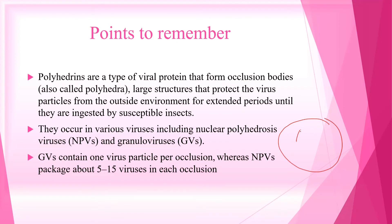NPV stands for nuclear polyhedrosis virus. Polyhedrin proteins are structural proteins found in occlusion bodies, which protect virus particles. NPV viruses form occlusion bodies, and granuloviruses (GV) contain 5-15 virus particles in an occlusion body.